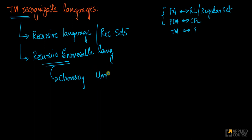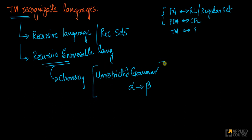If you recall unrestricted grammars — we talked about unrestricted grammars where you could have anything deriving anything. When we learned about the Chomsky hierarchy, we said the topmost thing is called the unrestricted grammar, where there are no restrictions, and this unrestricted grammar generates recursively enumerable languages.